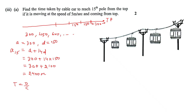Time equals distance divided by speed. So time = 2400 ÷ 5 = 480 seconds. Converting to minutes: 480 ÷ 60 = 8 minutes. So it will take 8 minutes for the cable car to reach the 15th pole from the top.